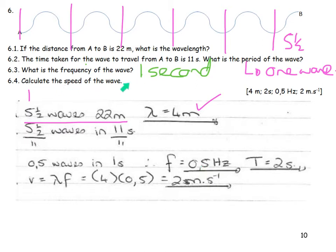Calculate the speed of the wave. V is equal to lambda f. I've got the wavelength. I've got the frequency. I can work out the speed. 4 times 0.5.